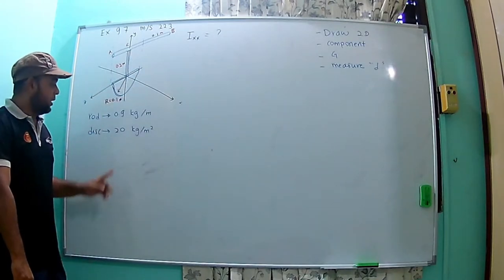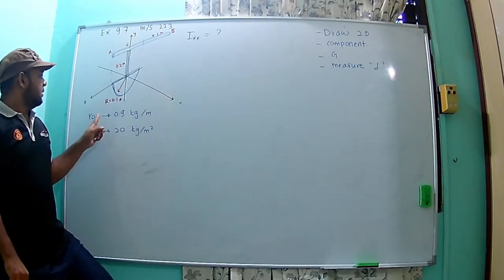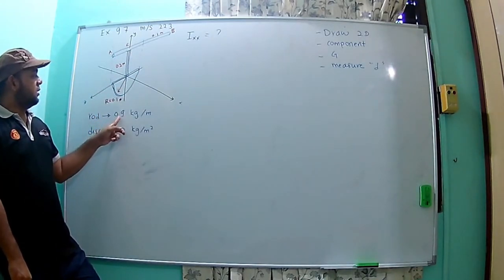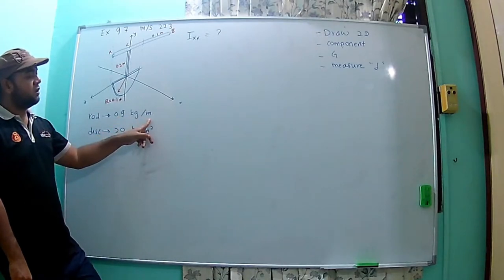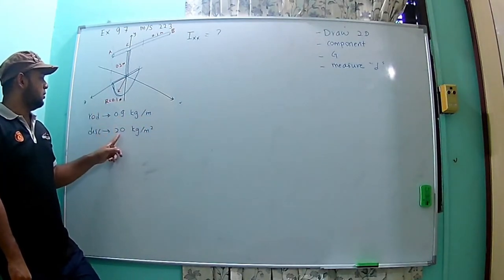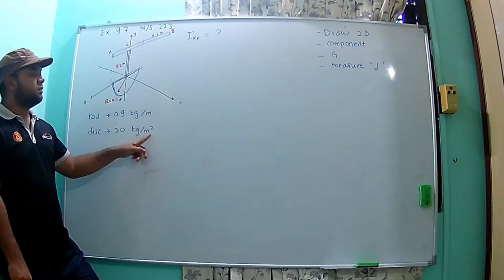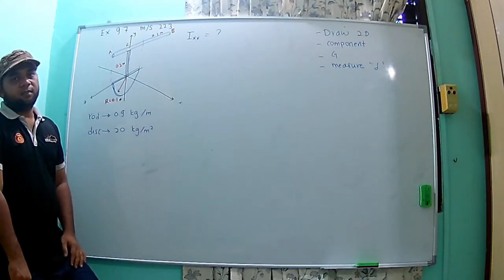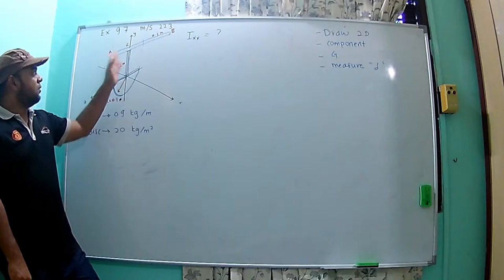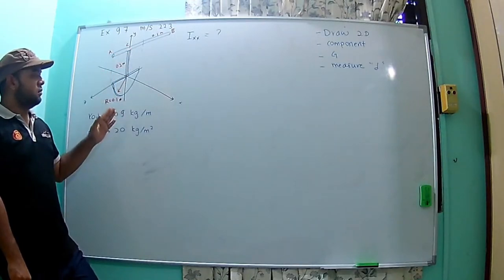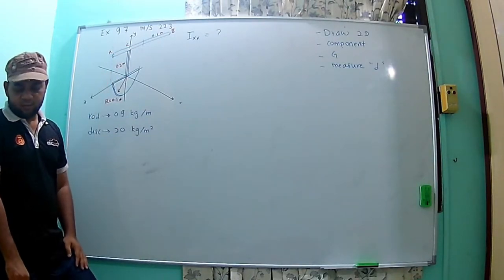The mass of the rod is given in terms of 0.9 kilogram per meter, and this is 20 kilogram per meter squared. So you have to calculate what is the Ixx for each rod, and this is to be used in the equation.